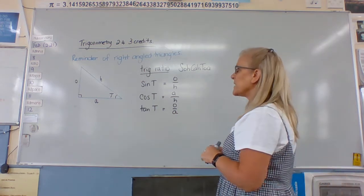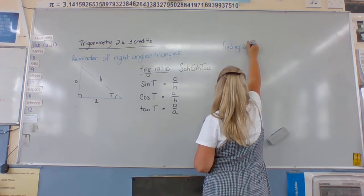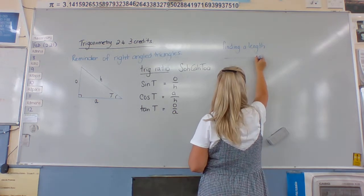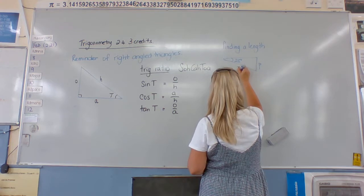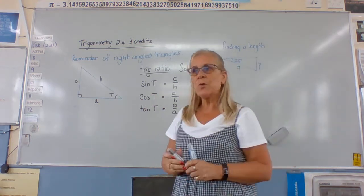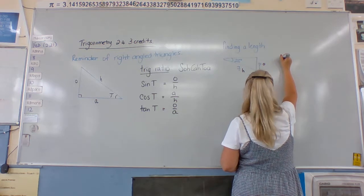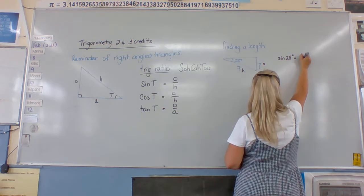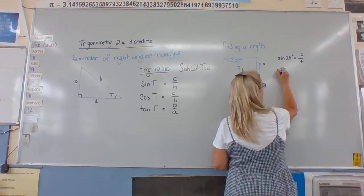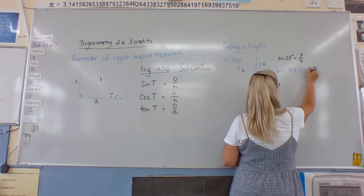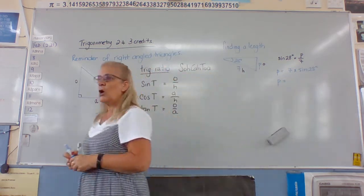So if we are finding a length, then what we do first of all is label the triangle. We've got O and H — we don't label the side we haven't got anything on. So we know we have sine of 28 degrees equals P over 7. Then we put it into our calculator: our working step should be P equals 7 times sine of 28 degrees, making sure that our calculator is in degrees. And therefore P equals — is it going to be bigger or smaller than 7?